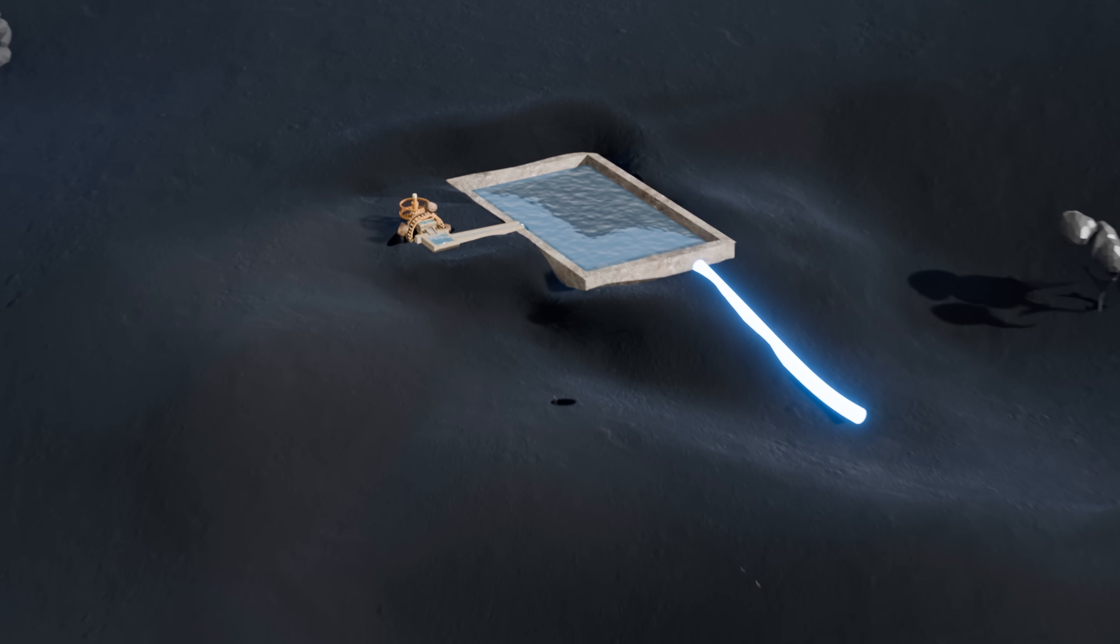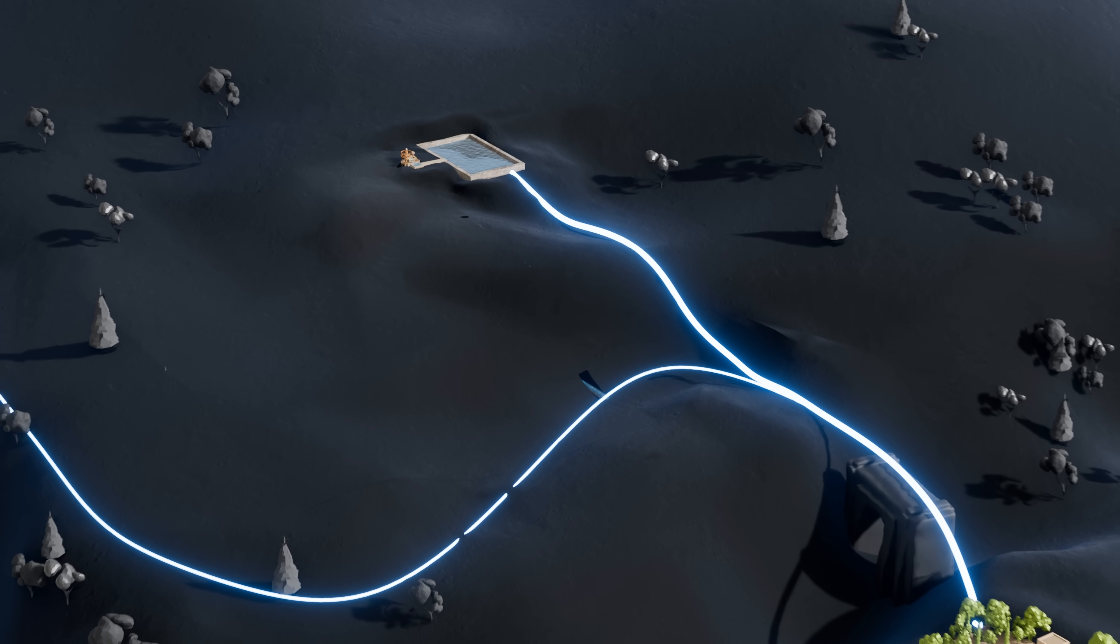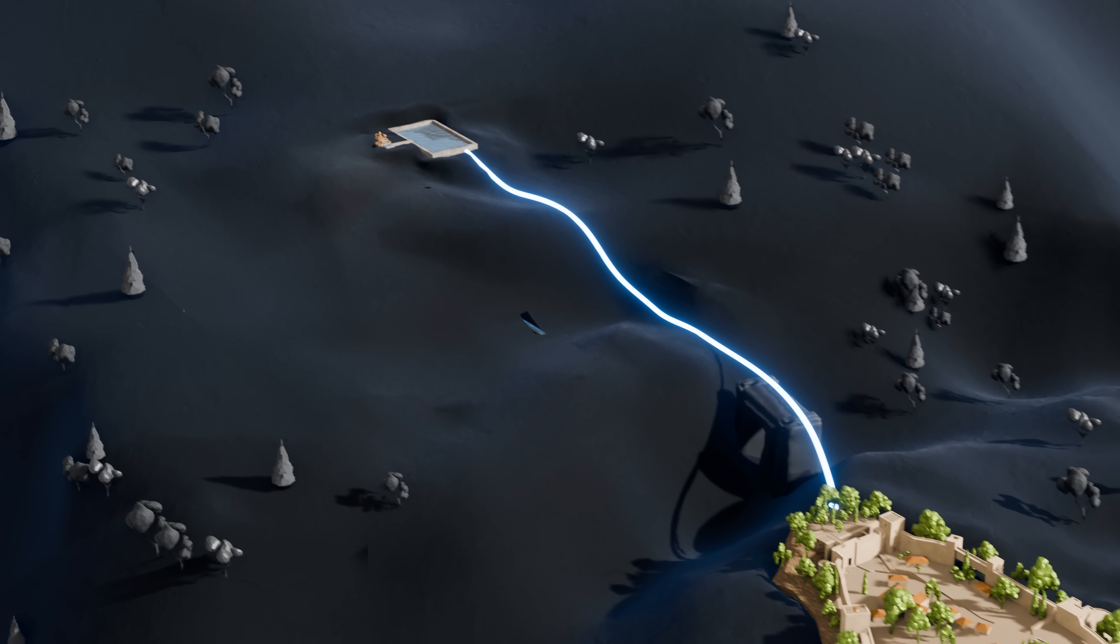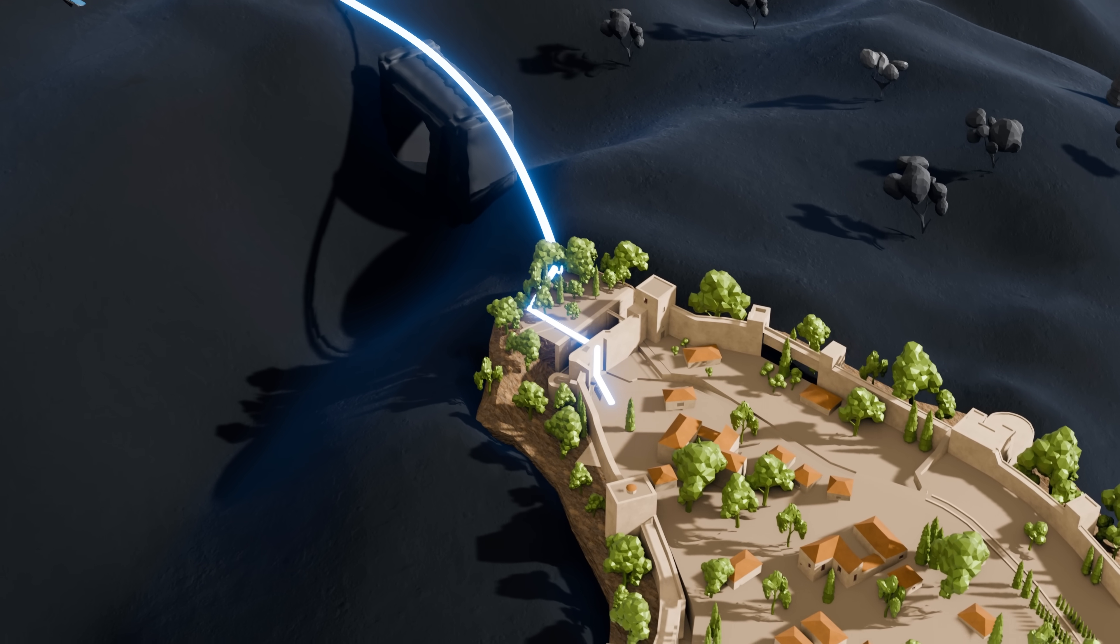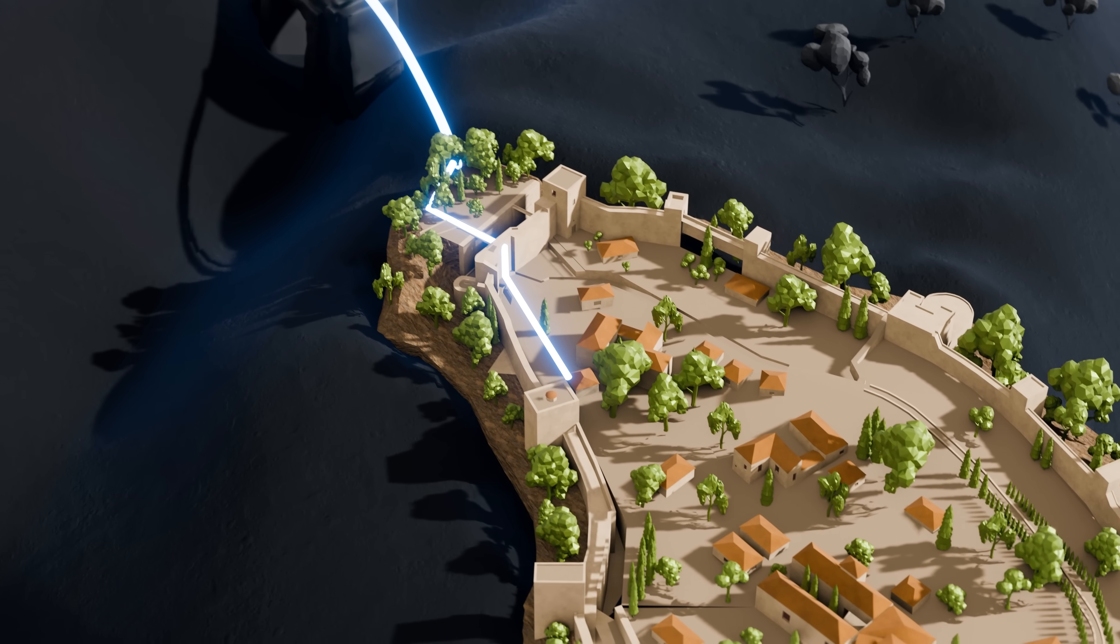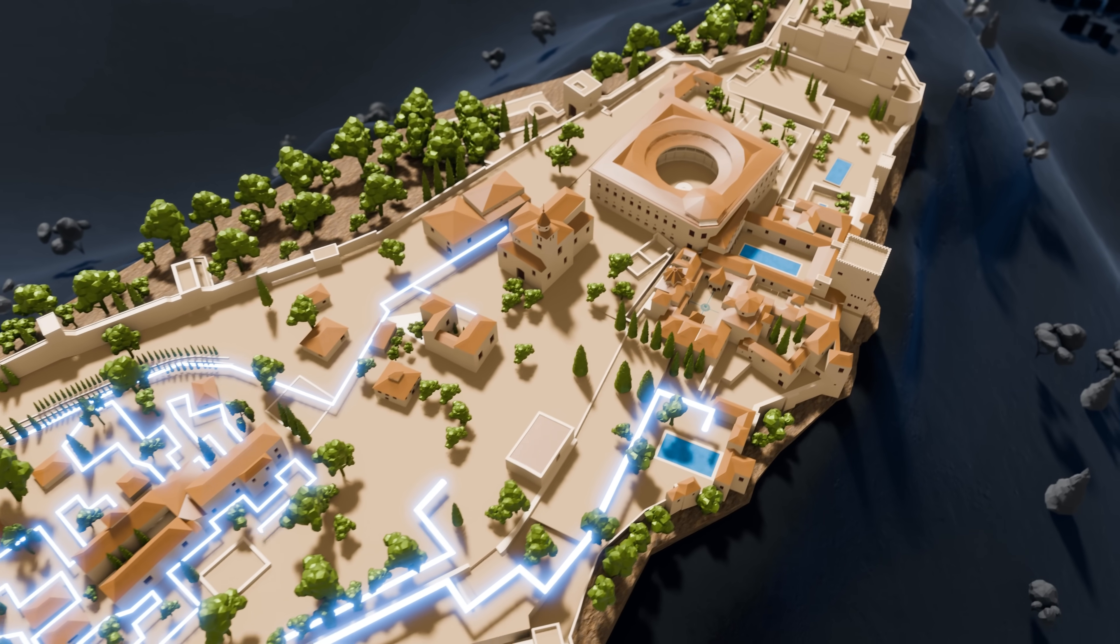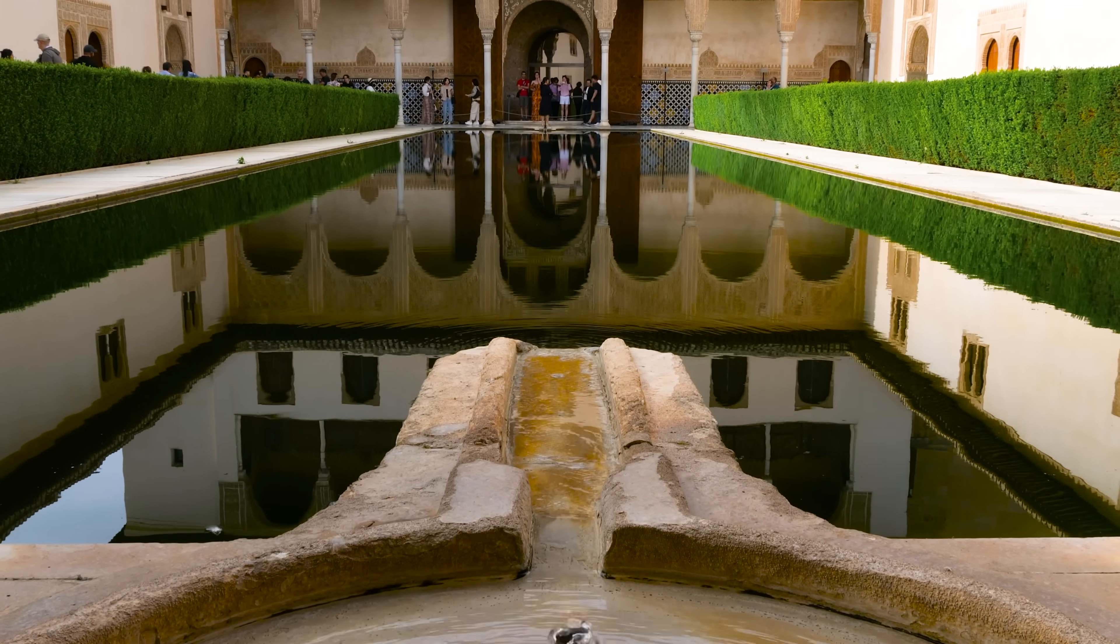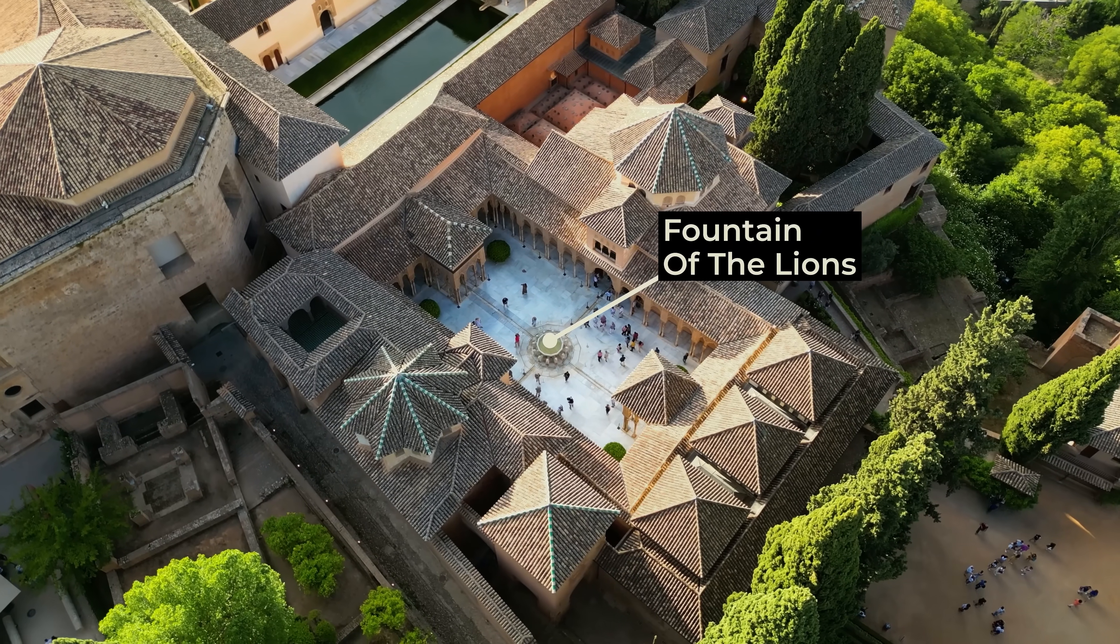Having all this water stored above the palace pressurized the entire system, and at the same time, gave the palace a backup supply of water in times of drought. From here, the water passed over an aqueduct and into the palace, where things start to get really interesting. The water would split off into a complex network of carefully designed channels, carrying just the right amount of water to the pools and fountains all around the palace, the most impressive of which was located at the heart of the palace.